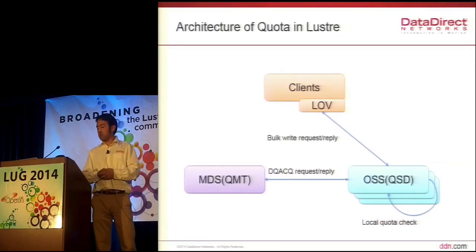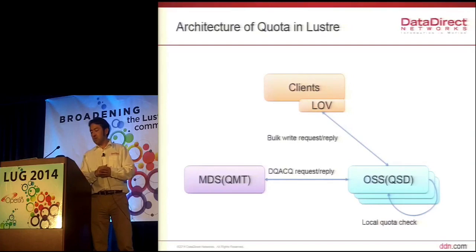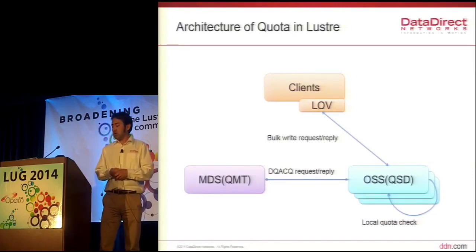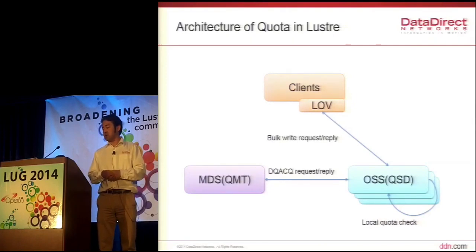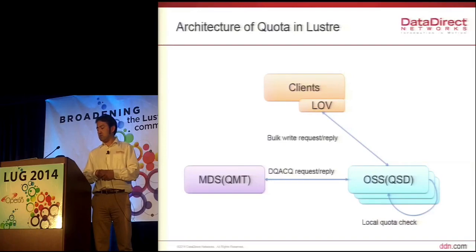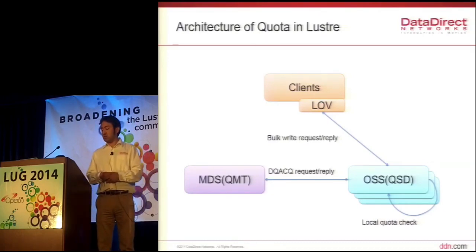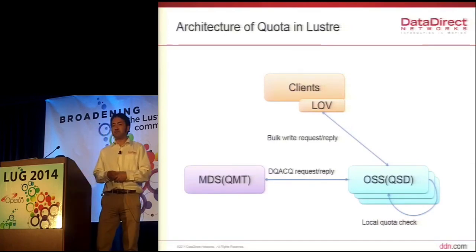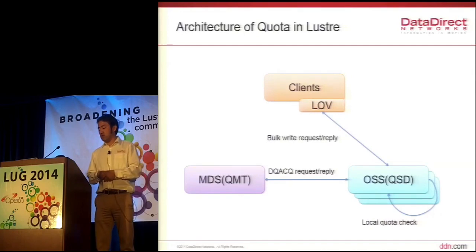This is the data flow of the quota architecture today. When a client writes data to an OST, the OST estimates how much space is needed for the client access. If the OST has enough space, it responds to the client and the client can write data. If the OST doesn't have enough space, it talks to the quota master MDT to acquire additional space. The quota master calculates how much space has already been granted, and if the quota limit is not exceeded, responds by granting additional quota space. Then the client continues to write to the OST.